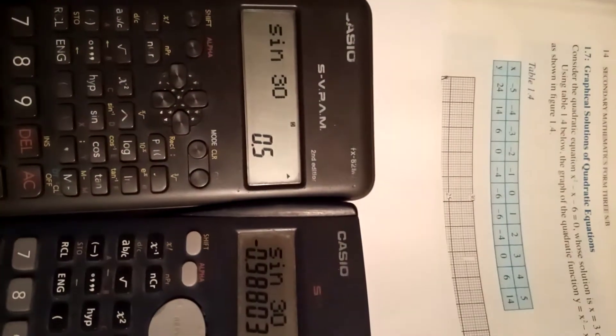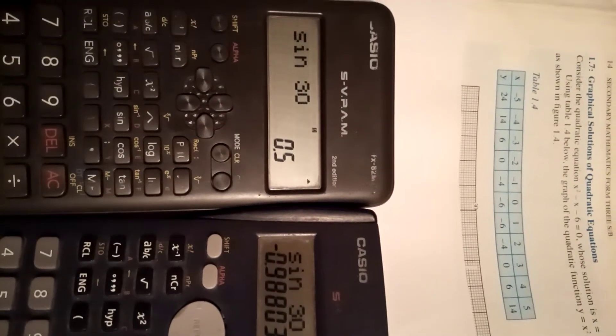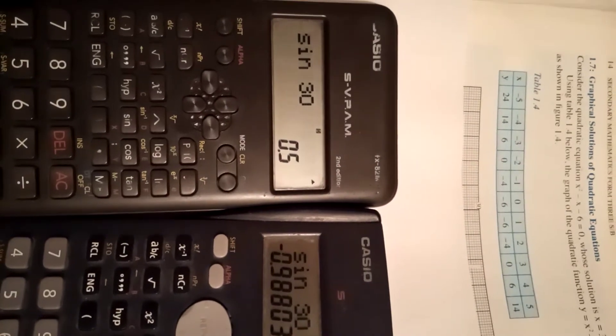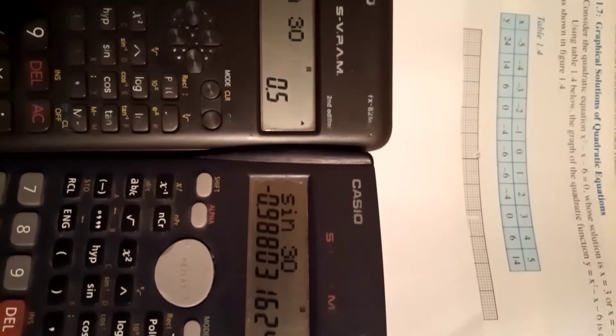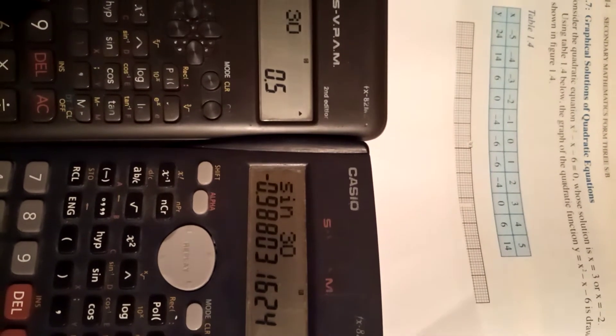You can see there's a table here which is already filled with values of x and y. The function we're having here is y = x² - x - 6.